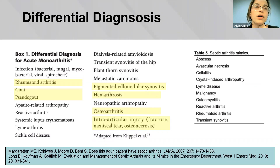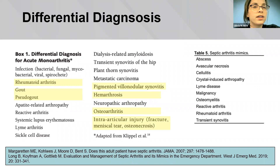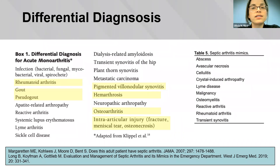When working a patient up for potential native joint septic arthritis, keep in mind the differential diagnoses: rheumatoid arthritis or an acute flare, crystalline arthropathy including gout and pseudogout, PVNS, hemarthrosis, and non-inflammatory effusion due to OA or intra-articular injury. Other do-not-miss diagnoses include malignancy and AVM.